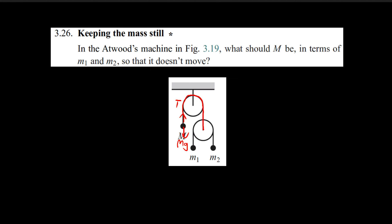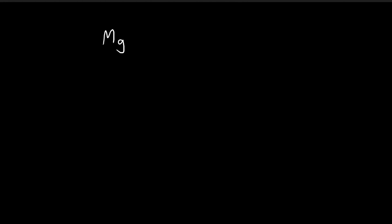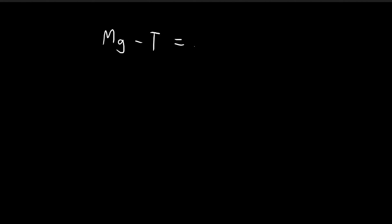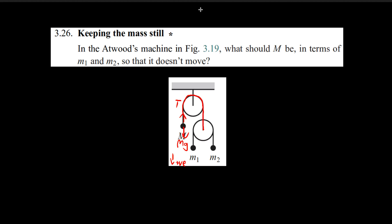So immediately we can set up an equation. In this problem, I'm going to take downwards as positive, so if a force is positive, that means it's pointing downwards. So we have Mg, this gravitational force that's pulling downwards, minus the tension that's pulling upwards. And since this is going to stay still, we get F equal to Ma, which is equal to zero. So we get Mg minus T is equal to zero. This is the first relationship we get.